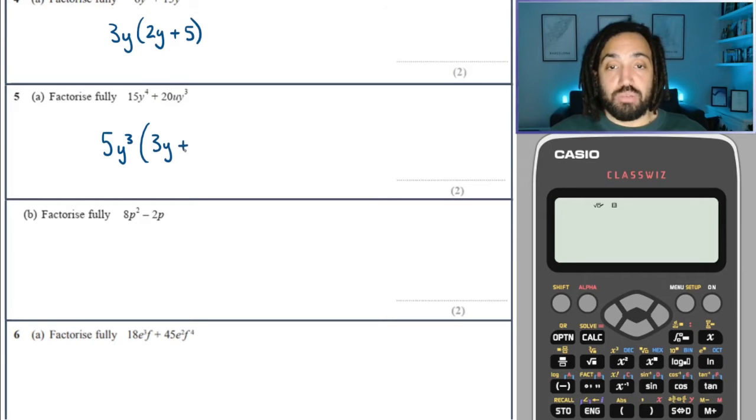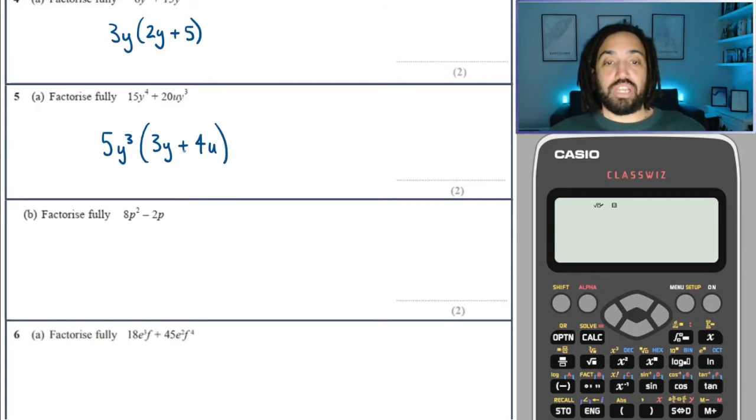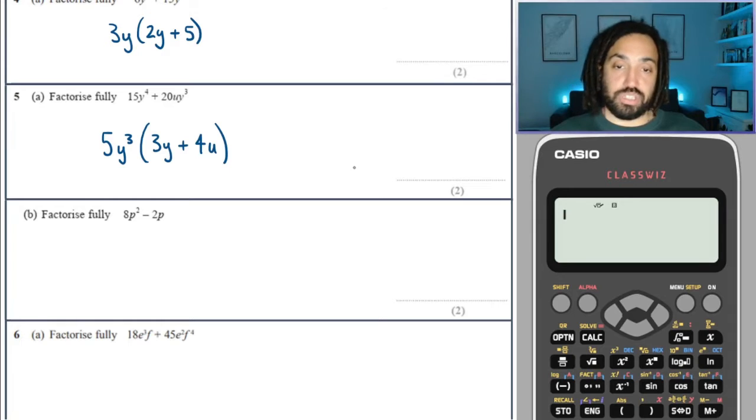Okay, what have I got at times 5Y cubed to make twenty? That's four. And I need a U in there for this U right there. And the Y cubed is already outside the bracket, so that is good to go.